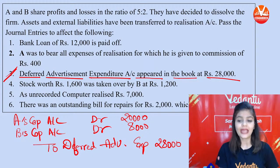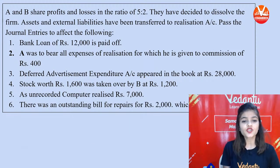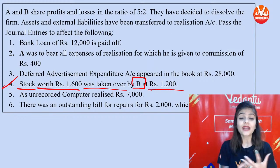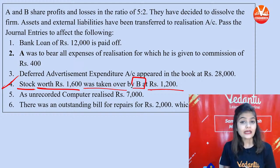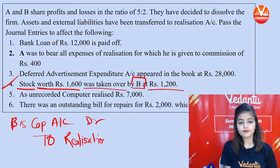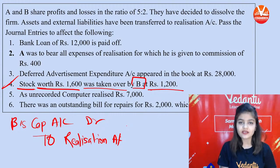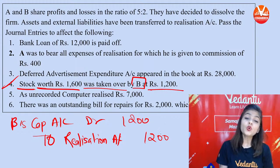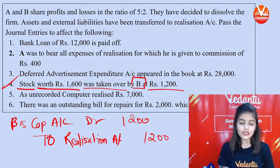Fourth transaction — stock worth ₹1,600 was taken over by partner B at ₹1,200. When a partner takes over an asset, the journal entry is: Partner's Capital Account Debit, To Realization Account. So: B's Capital Account Debit, To Realization Account, ₹1,200.